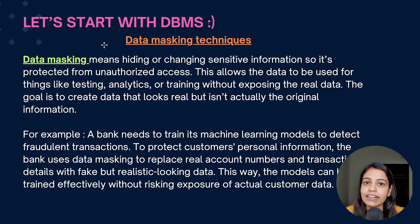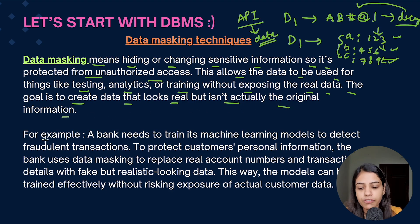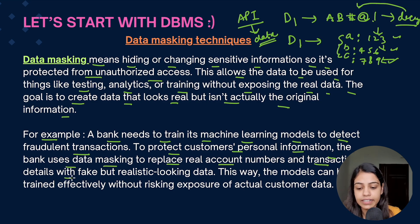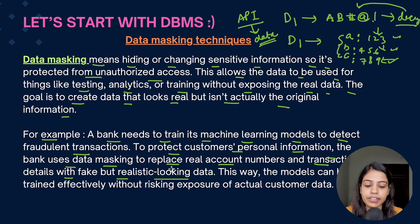Data masking means hiding or changing sensitive information so it's protected from unauthorized access. It allows data to be used for testing, analytics, or training without exposing real data. The goal is to create data that looks real but isn't the original information. For example, a bank training a machine learning model to detect fraudulent transactions uses data masking to replace real account numbers and transaction details with fake but realistic-looking data.